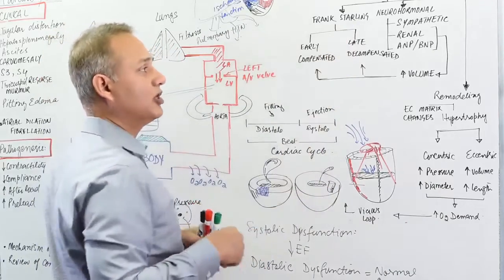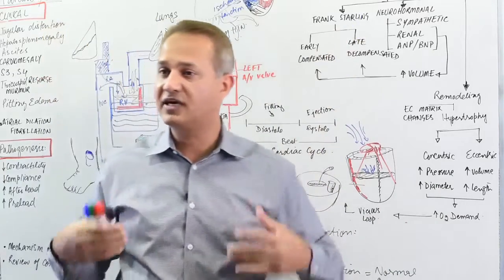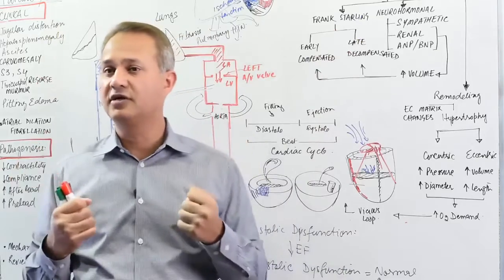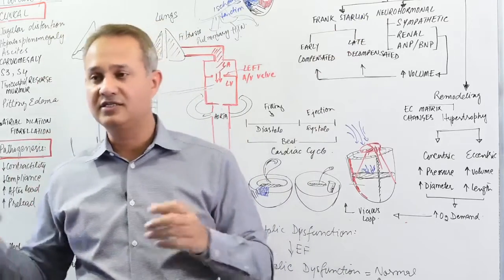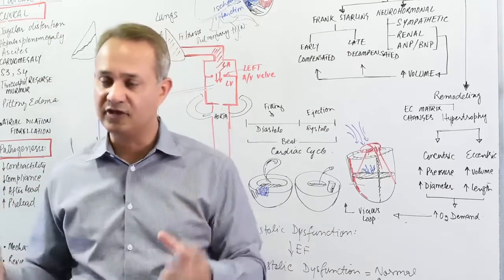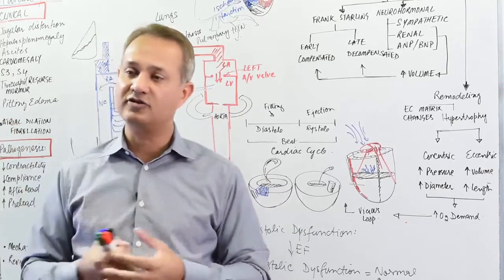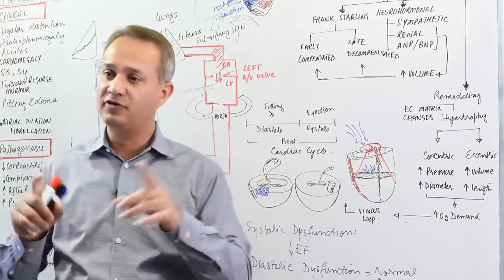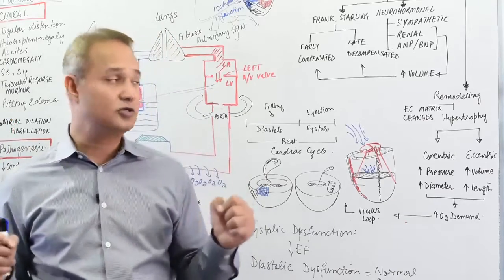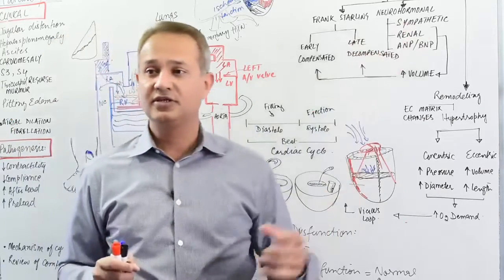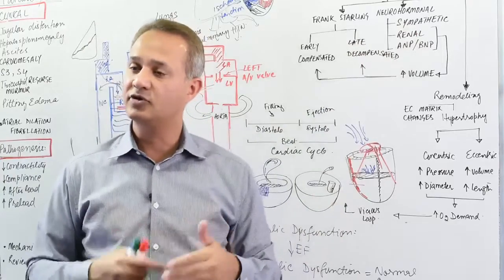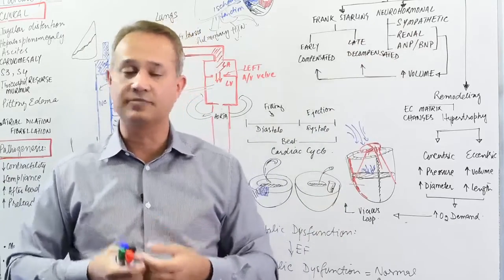How about neurohormonal systems? The sympathetic system becomes engaged right away—epinephrine is released, vasoconstriction occurs, and increased contractility and force of contraction happen. We've talked about this in detail before. The result is that this mechanism helps increase pressure and volume.